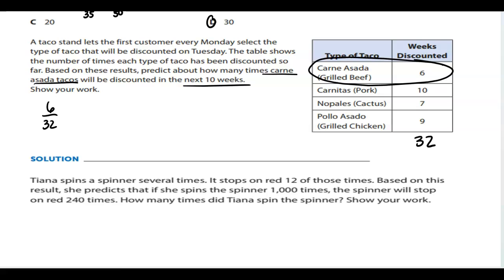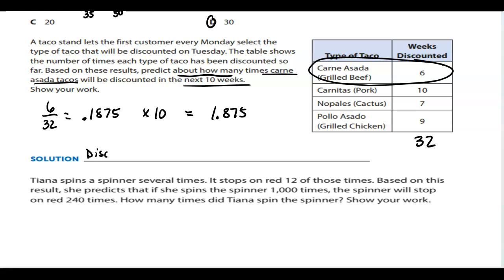If you divide that, it's equal to 0.1875, or about 18.75%. So how many times is it going to be discounted in the next 10 weeks? We take its current probability of 0.1875 and multiply it by 10, and that gives you 1.875. Since it says about how many, it's going to be discounted about two times in the next 10 weeks.